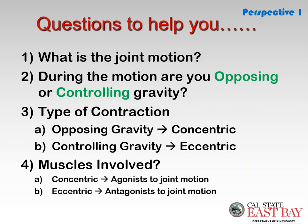To determine which muscles are involved: if it's a concentric contraction, it's the agonist to the joint motion — so you refer back to question number one. For an eccentric contraction, it's the antagonist muscles to the joint motion.